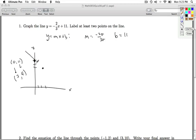And we can connect those with a straight line, and there it is. So the y-intercept is 0, 11, and then the point 3 comma 9. Alright, so that's one way to do it.